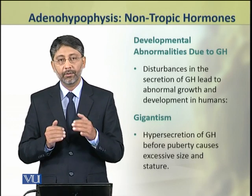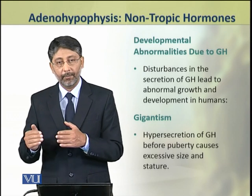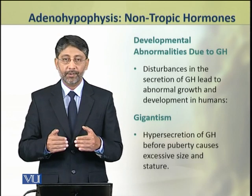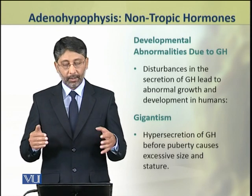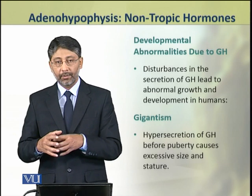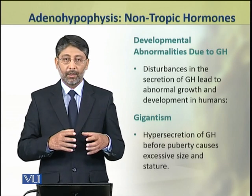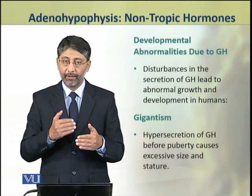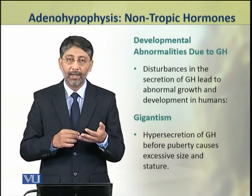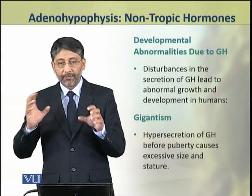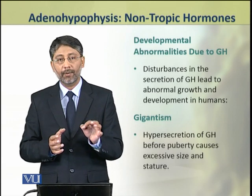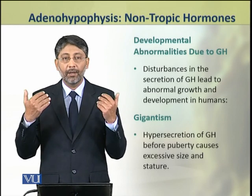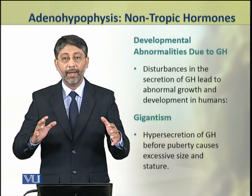Growth hormone is very important in the developmental processes of animals and humans. Its undersecretion or oversecretion has drastic effects, leading to abnormal growth and development of the body. Disturbances in growth hormone levels produce three major conditions. The first is gigantism — excessive size and stature. If growth hormone is secreted in excessive amounts during childhood before puberty, it leads to a very large increase in stature, a condition called gigantism.